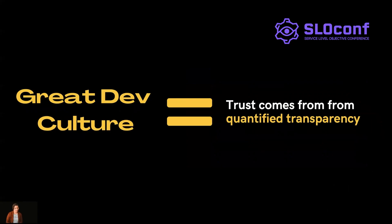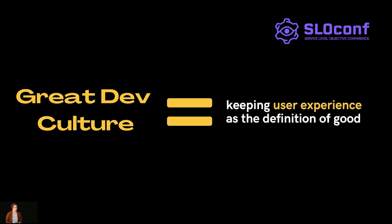This is what allows for truly great dev culture, because great dev culture is when trust comes from quantified transparency in distributed systems. That's a type of transparency you can only get through doing site reliability engineering with error budgets in place. Great dev culture keeps user experience as the definition of good, because that allows everyone at any level in the business to understand the bottom line of what and why we come to work every day to improve these systems — a shared and external-to-the-organization understanding that's absolutely measurable from the user's experience.